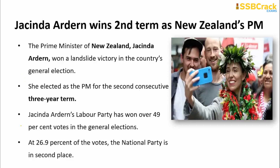Next, regarding New Zealand's election: Jacinda Ardern, the Prime Minister of New Zealand, won a landslide victory in the country's general election and has been re-elected for a second consecutive term. The term for a PM in New Zealand is three years. She is from the Labour Party, which won over 49% of the vote, while the National Party came second with 26.9%.